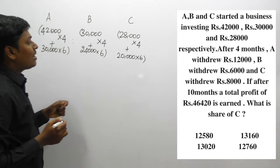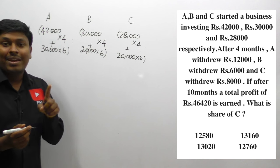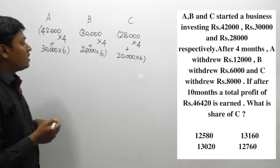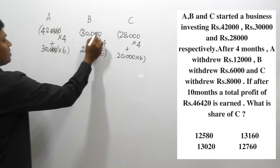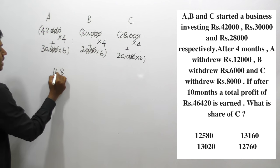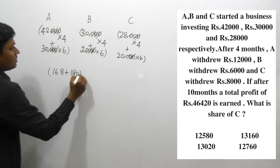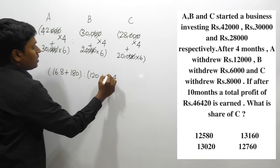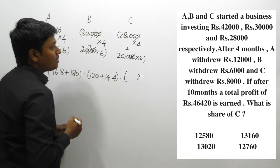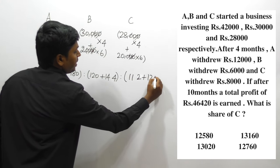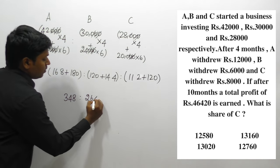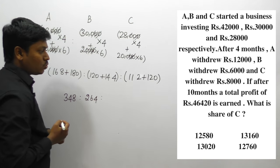Cancelling three zeros: A = 42 × 4 + 30 × 6 = 168 + 180 = 348; B = 30 × 4 + 24 × 6 = 120 + 144 = 264; C = 28 × 4 + 20 × 6 = 112 + 120 = 232. Cancelling on 2-table twice: 348 → 174 → 87; 264 → 132 → 66; 232 → 116 → 58. Ratio is 87 : 66 : 58.